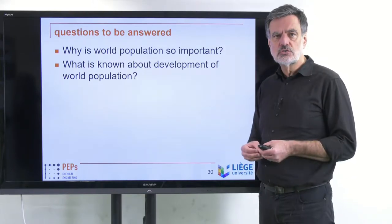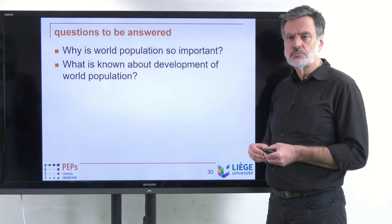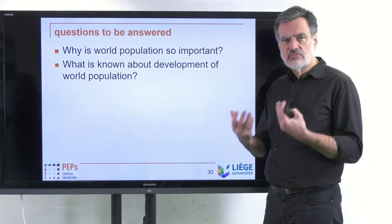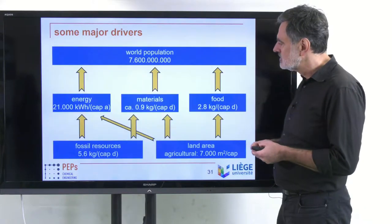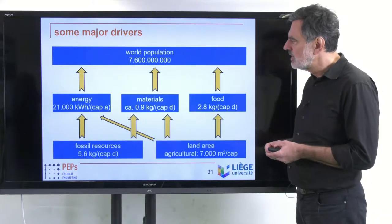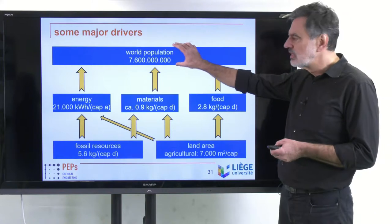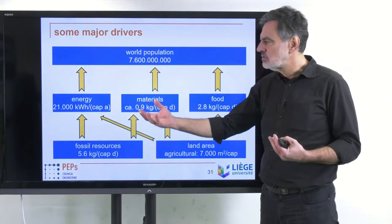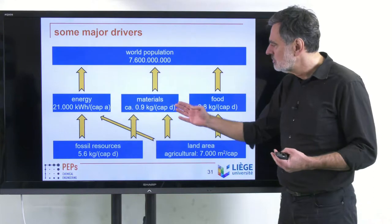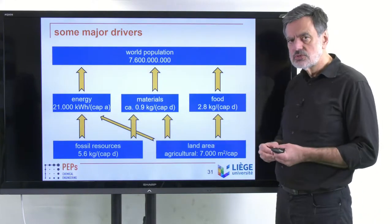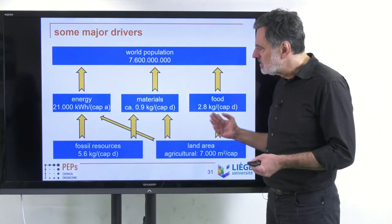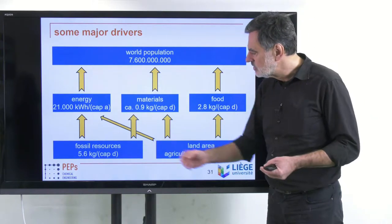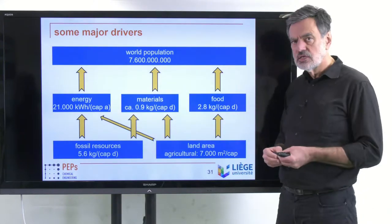Why is global population such an important parameter? In order to evaluate that, let's have a look at this diagram where I collected some information. On the one hand side we have the world population. Everybody needs to fulfill certain demands with respect to energy, materials, as well as foodstuff, and these things are supplied from fossil resources on the one hand side and land area.